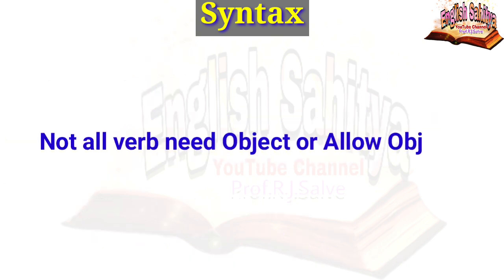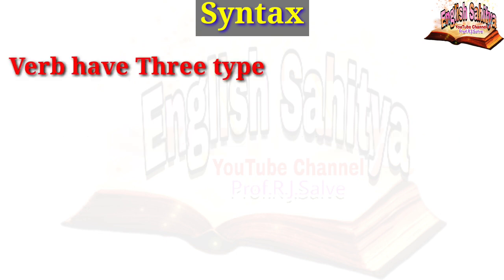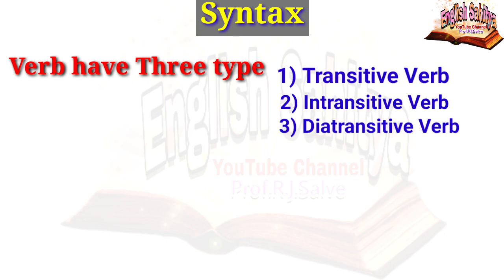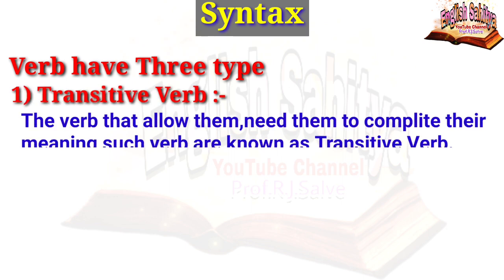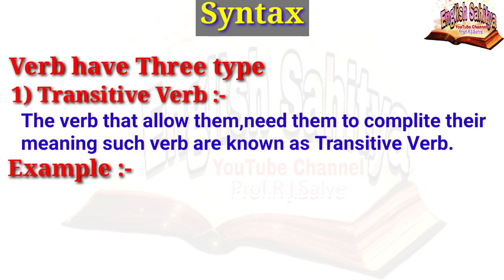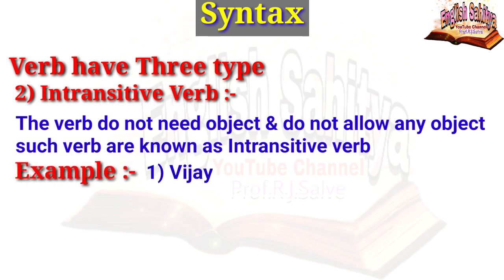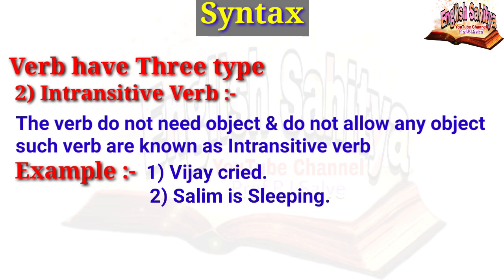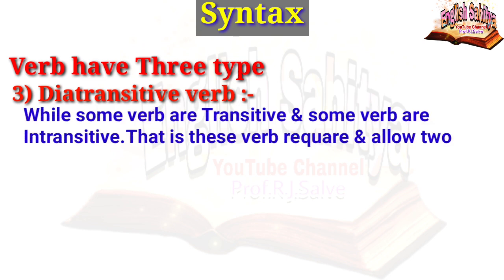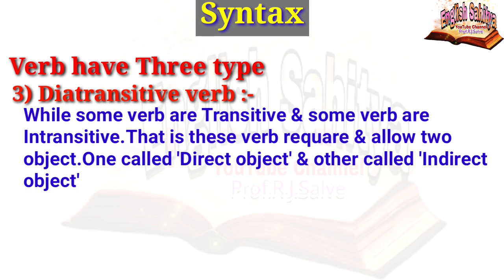Not all verbs need or allow an object. Verbs have three types: transitive verbs, intransitive verbs, and ditransitive verbs. Transitive verbs need an object to complete their meaning. Intransitive verbs do not need or allow any object — for example, 'Vijay cried,' 'Salim is sleeping' — you cannot add an object to these. Ditransitive verbs require and allow two objects: one called the direct object and another called the indirect object. For example, 'the waiter handed me the bill.'